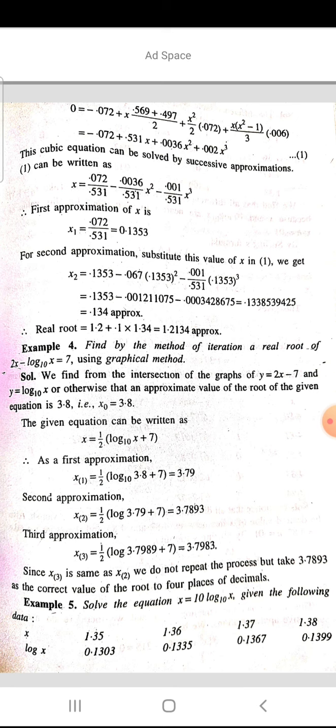First approximation: x₁ = 0.072/0.531 = 0.1353. Second approximation: substitute the value of x in equation (1), we get x₂ = 0.1353 - 0.067(0.1353)² - 0.001(0.1353)³/0.531, and on solving we get x₂ ≈ 0.134. So the real root will be 1.2 + 0.1(0.134) = 1.2134.